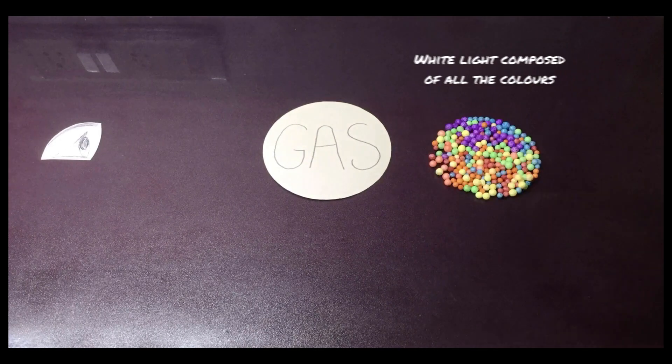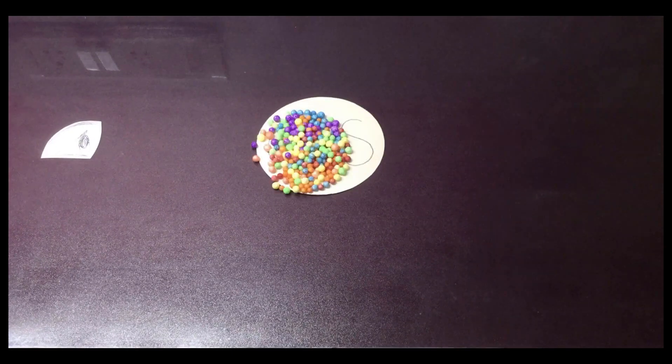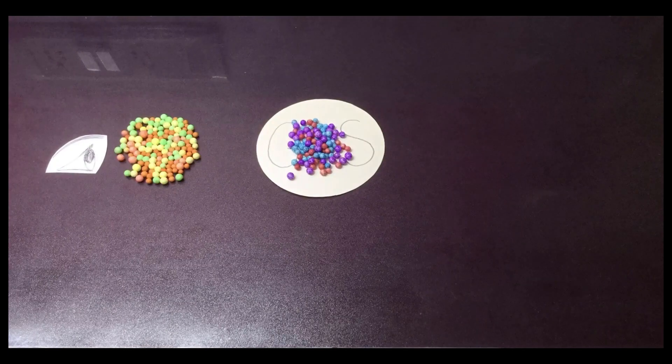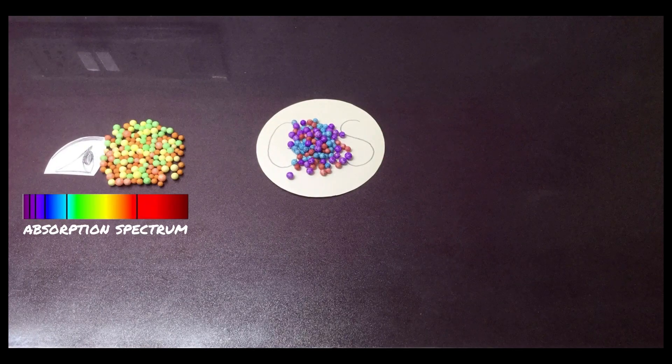When light passes through a thin gas like hydrogen, some specific colours are absorbed and we see a rainbow with missing colours, called an absorption spectrum.